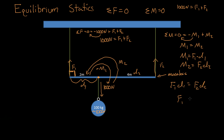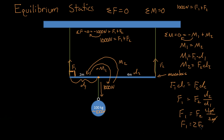Dividing through by d1, we get force one equals force two times d2 over d1 — that's force two times four meters over two meters, which simplifies to two. So force one equals two times force two — force one is twice as much as force two.